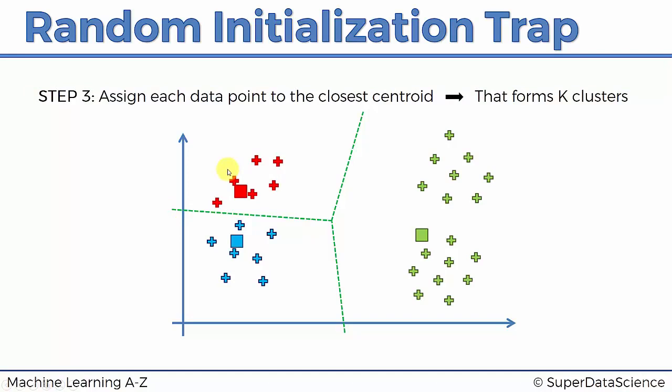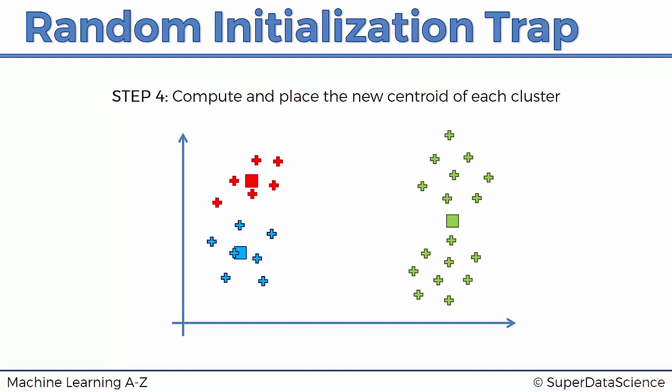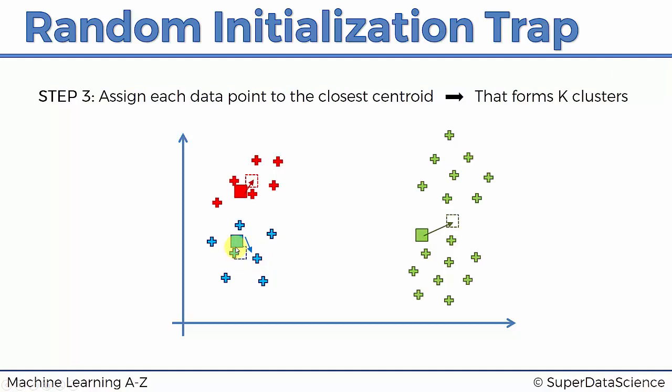So now we've assigned each data point to the closest centroid. That's great. Now we're going to move on to step four and we're going to move these clusters. So we're going to recalculate, compute and place the new centroids for each cluster. There we can see that that is probably the center of mass for the red points. That's the one for blue points. That's the one for green points. So we move our centroids to the new locations.